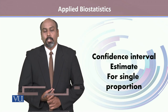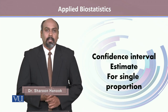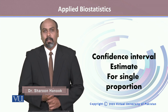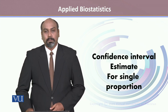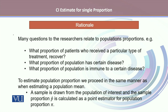This module talks about calculating the confidence interval estimate for a single proportion. Many questions researchers face relate to the population proportion. For example, they may want to measure what proportion of patients who received a particular type of treatment recover, what proportion of the population has a certain disease, or what proportion of the population is immune to a certain disease.